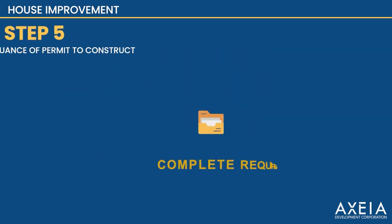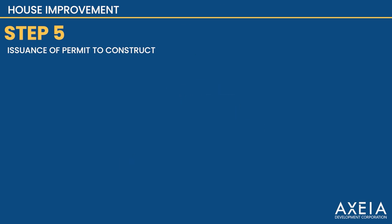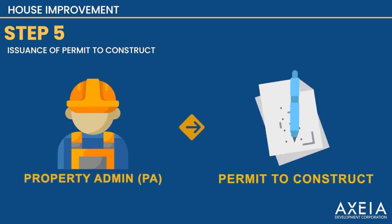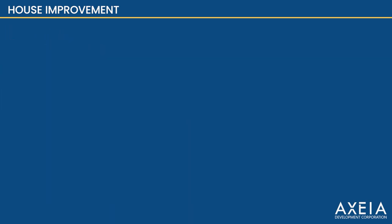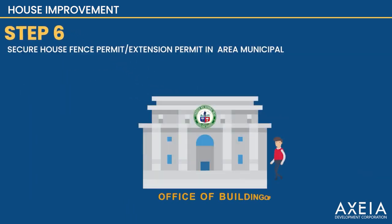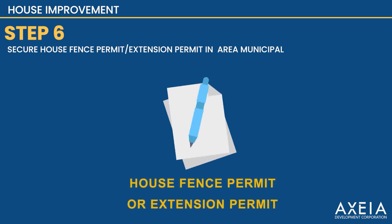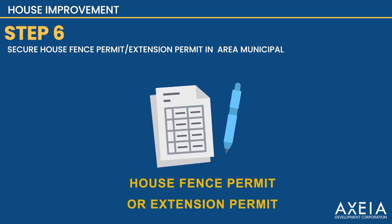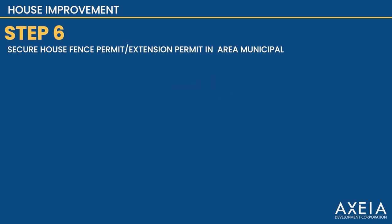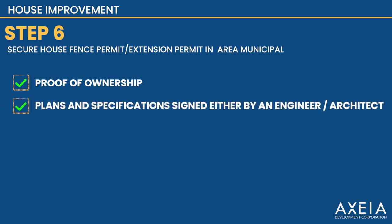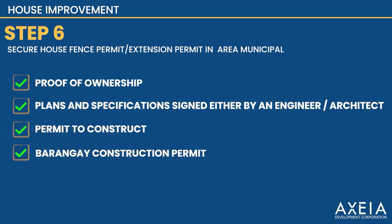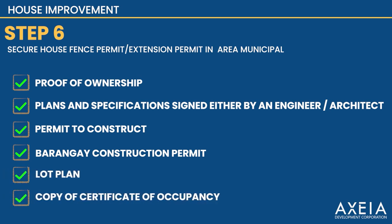Step 5. Once uploaded, the Property Admin shall give the permit to construct. Step 6. You shall go to the Office of Building Official in your area to secure a house fence permit or extension permit with the following requirements: proof of ownership, plans and specifications signed either by an engineer or architect, permit to construct, barangay construction permit, lot plan, and copy of certificate of occupancy.